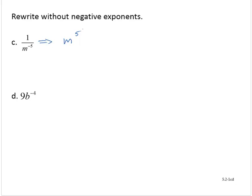Now, exercise D, we have 9b to the negative fourth power. Again, we want to think very carefully and say to ourselves, what does that exponent apply to? So what is this negative 4, that exponent? What does it see? It's attached only to the b.